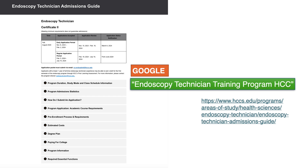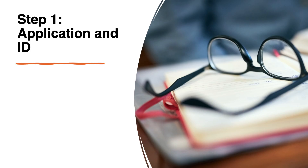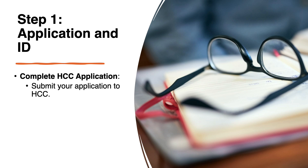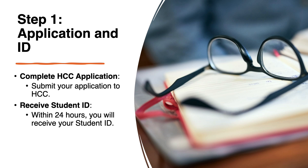To show you how easy it is, we have divided this into six steps and I would like to take you through those steps. Step one: you have to apply and get an ID from Houston Community College. Complete your Houston Community College application by submitting it online, and you will receive a student ID within 24 hours. This is the most important thing to remember — the student ID number is what you should use for all your future correspondence.